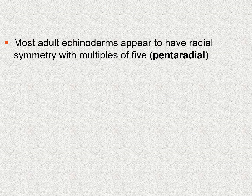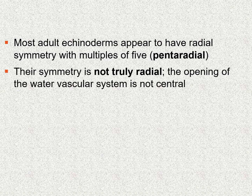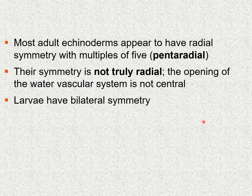As you could see from the previous images, adult echinoderms appear radial and generally have multiples of five in terms of symmetry. They have radial symmetry with multiples of five, and the term for this is called penta-radial. Their symmetry is not truly radial though — remember, these are part of the group of animals called the bilaterians. The opening of the water vascular system, the madriporite, is not central but slightly lateral, which is part of what makes it not truly radial and makes it a bilaterian.